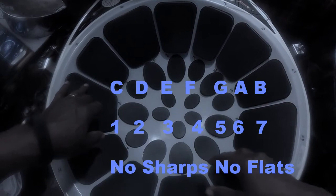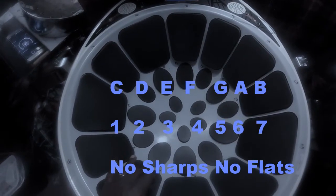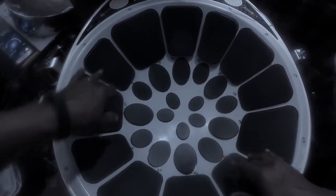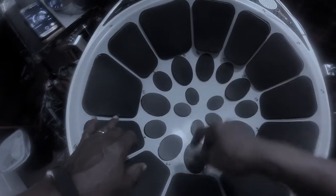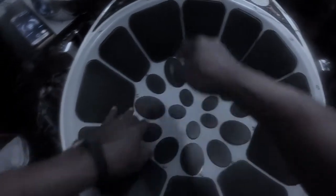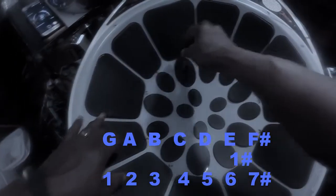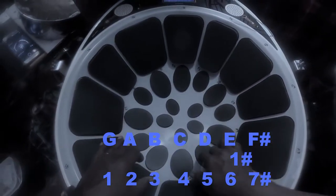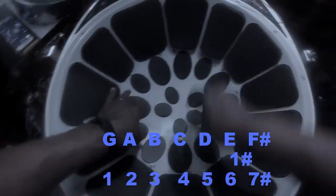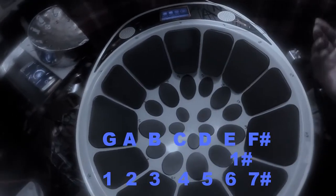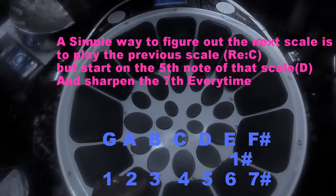Play the C major scale again. Then play the C major scale from G — go five notes up. C, D, E, F, G is your fifth note. Now start from G and play the same C major scale. The D is the fifth note on the G scale. And you sharpen the seventh. The F falls on the seventh degree, so the seventh degree is sharp.